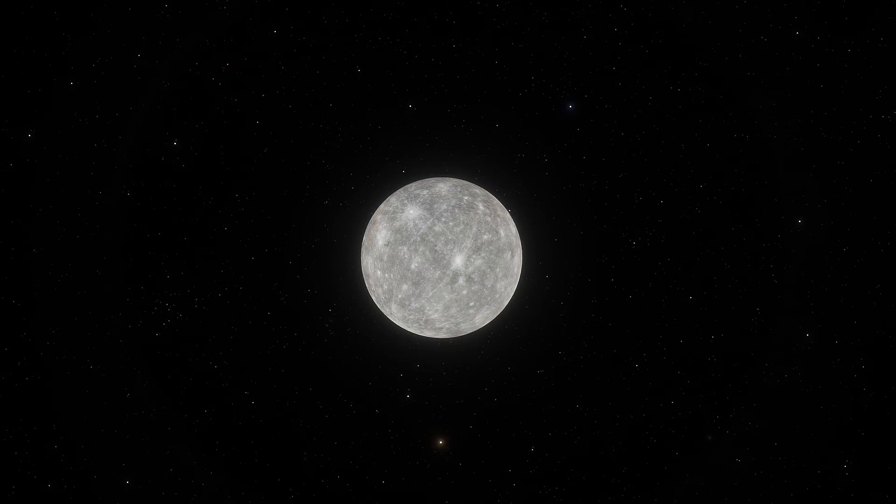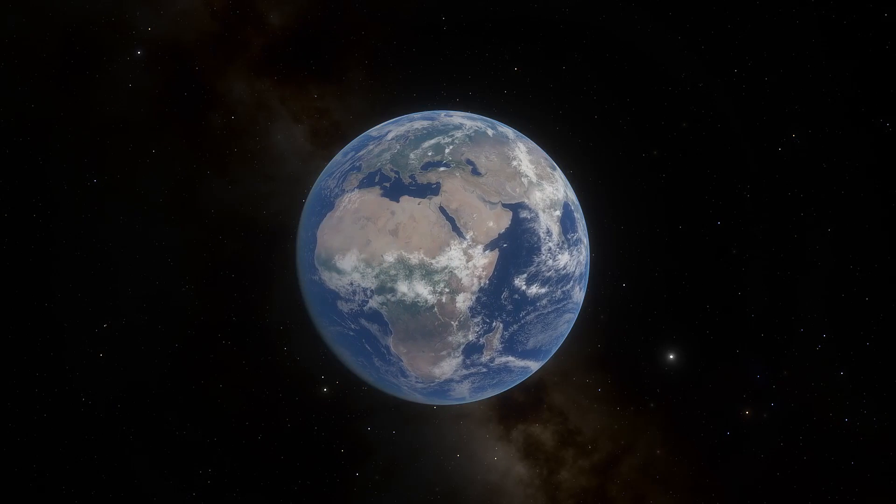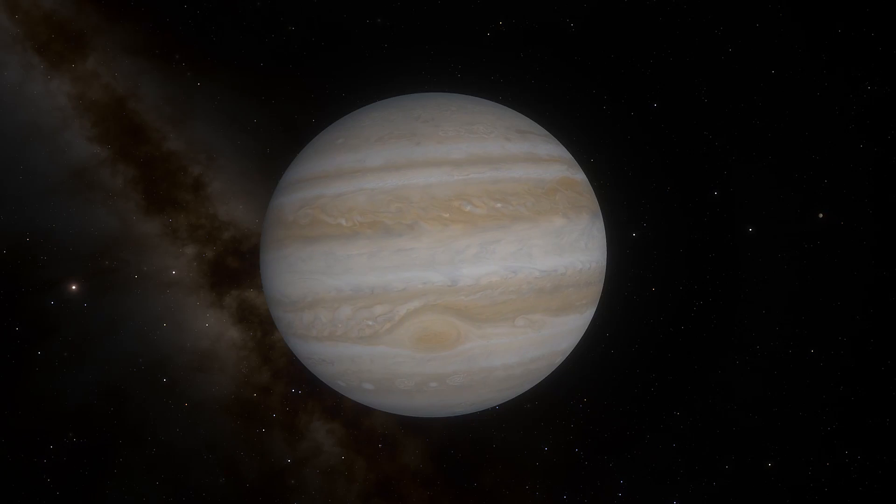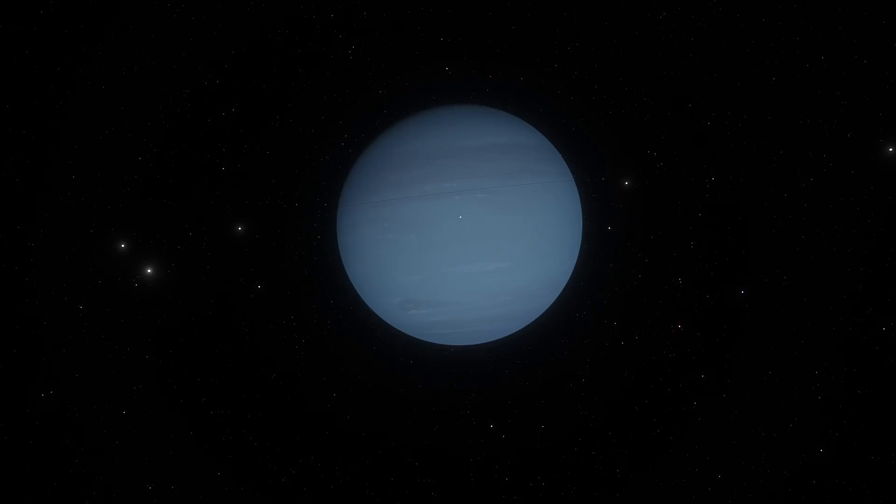There are four inner terrestrial planets: Mercury, Venus, Earth, and Mars, and four outer gas giant planets: Jupiter, Saturn, Uranus, and Neptune.